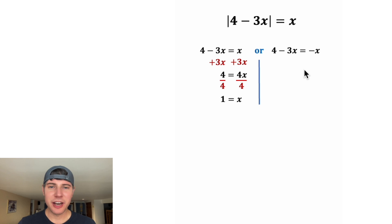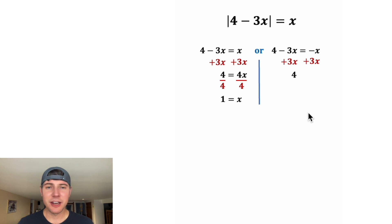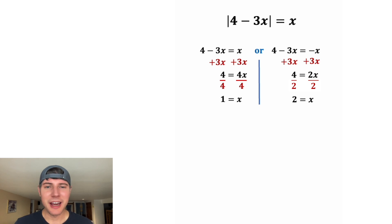And on the other side, we can add 3x to both sides. Once again, the left-hand side is 4. But on the right-hand side, negative x plus 3x is 2x. After we divide both sides by 2, we get x is equal to 2.